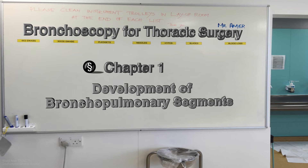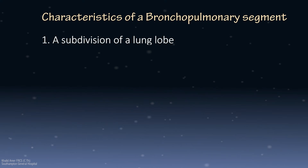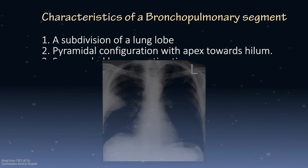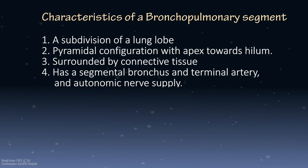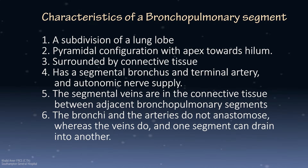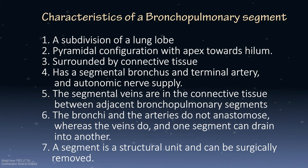A bronchopulmonary segment is a subdivision of a lung lobe. It is pyramidal in configuration with the apex towards the hilum, as evidenced by the radiology of an infarcted segment. It is surrounded by connective tissue and has a segmental bronchus, a terminal artery, and autonomic nervous supply. The segmental veins lie in the intersegmental connective tissue between adjacent segments. The bronchi and arteries do not anastomose whereas the veins do. If one vein is cut, the segment finds alternative drainage; if the artery is cut, infarction of the segment ensues. A segment is a structural unit and can be surgically removed.